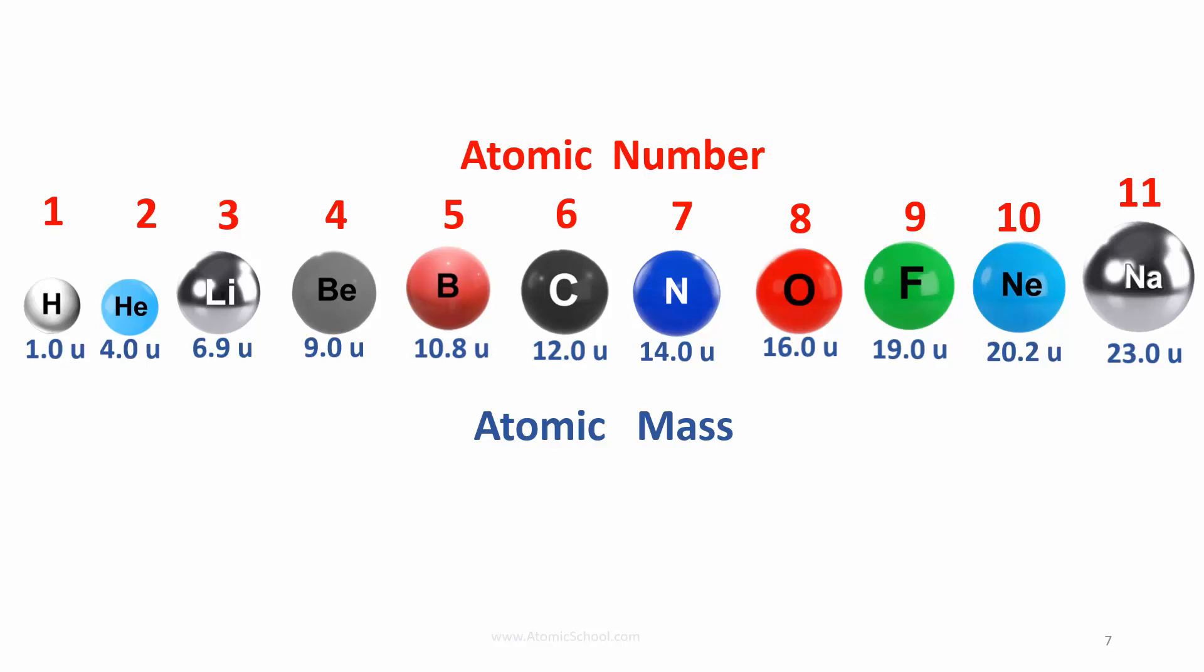This reminds us of the player number and player mass of our soccer team. Notice that atomic numbers are consecutive whole numbers like the player numbers, whereas atomic masses have decimal places like the player masses. Also, atomic numbers increase smoothly from one to the next, whereas the atomic masses increase unevenly.